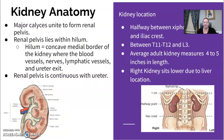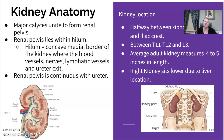So kidney anatomy — this is definitely something you're going to have to know for your board exam. Major calyces unite to form the renal pelvis. The renal pelvis lies within the hilum, and the hilum is the concave medial border of the kidney where the blood vessels, nerves, and lymphatic vessels enter and exit.